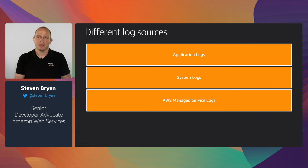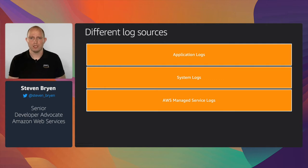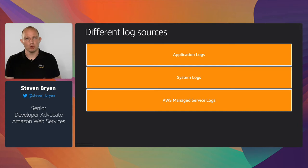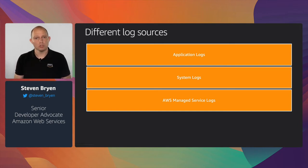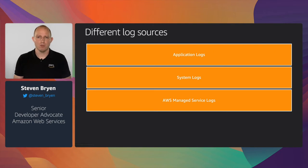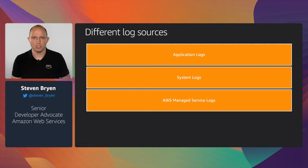When we think about some of the sources that are most useful when detecting and investigating security events, log sources are one of the key things we would look at to understand what's going on in our environment. Log sources come in various different shapes and formats, from application logs to system logs. AWS managed services also provide many logs to give you insight into what's happening in your AWS account.